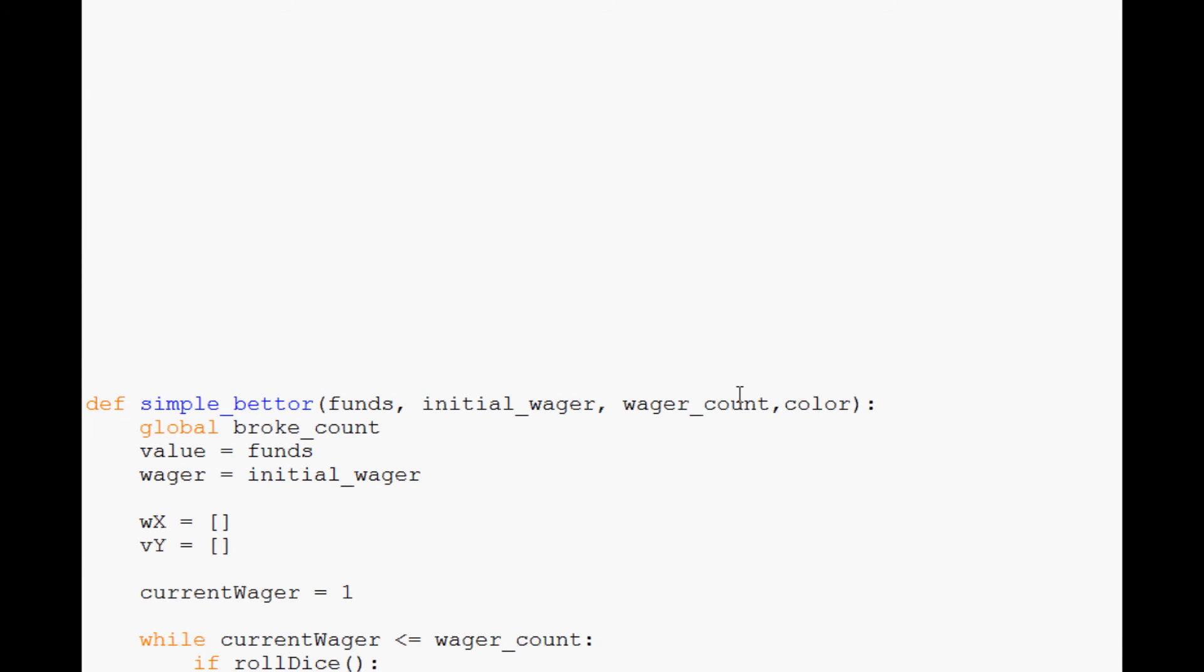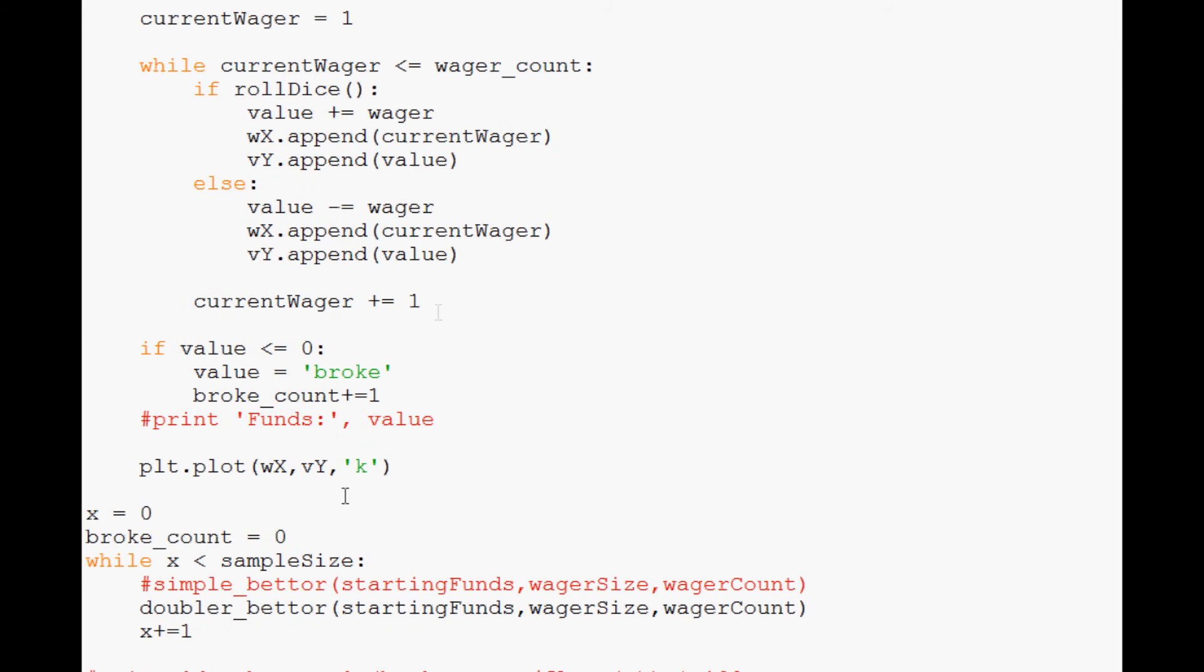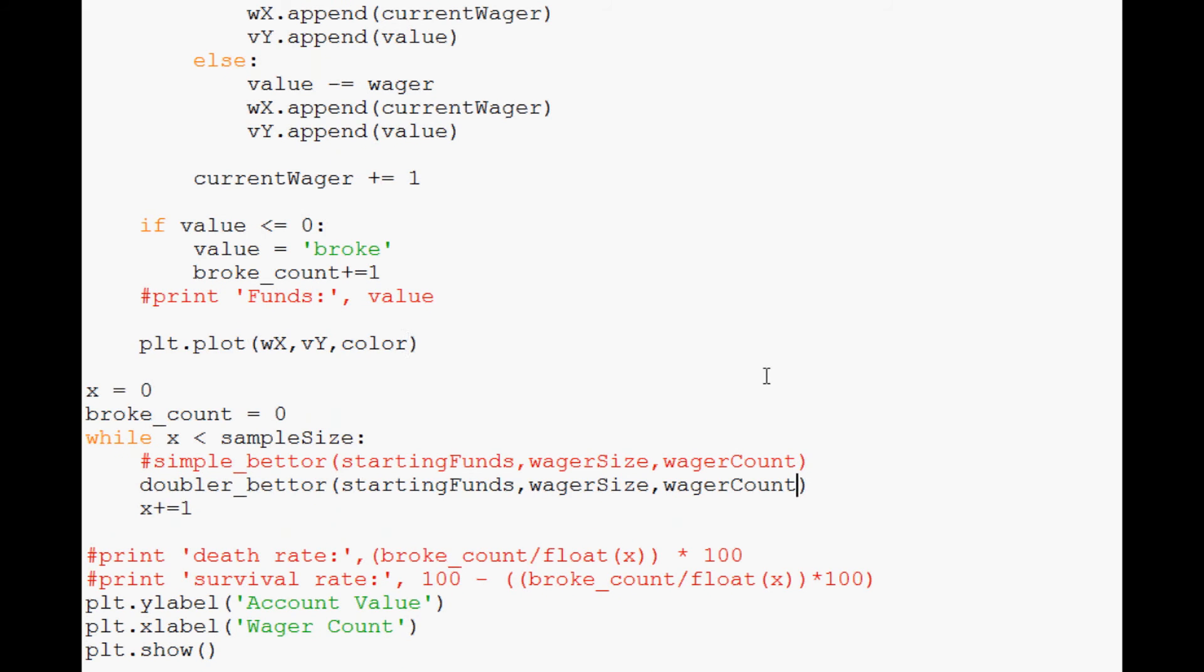For now we'll put in color. Then we'll do the same thing here. Simpler better color variable instead. And then when we go to plot, instead of k it's color. And then here we do doubler better with cyan, simpler better.